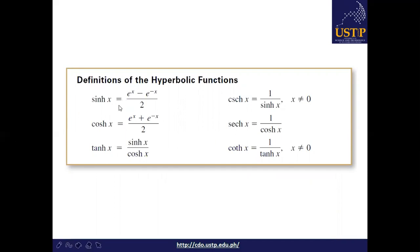The definitions of hyperbolic functions expressed in exponential functions: sinh(x) is equal to (e^x minus e^(-x)) over 2. Cosh(x) is equal to (e^x plus e^(-x)) over 2. Tanh(x) is equal to sinh(x) over cosh(x). Csch(x) is equal to 1 over sinh(x), where x is not equal to 0. Sech(x) is equal to 1 over cosh(x).